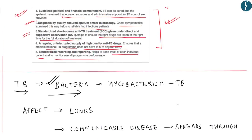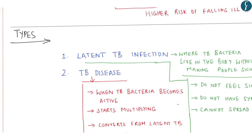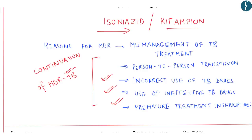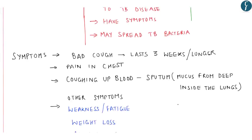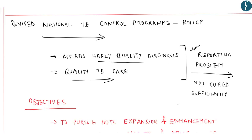In this news, we have understood about TB, various kinds of TB — latent TB and TB disease — MDR-TB and why MDR-TB is caused, the Revised National TB Control Program, DOTS — directly observed treatment short course — and NICSHARE. A prelims as well as a mains question can be formed on TB, kinds of TB, MDR-TB, and the steps taken by the Government of India to control TB. After going through this video, you will be able to solve most related questions in your prelims examination.